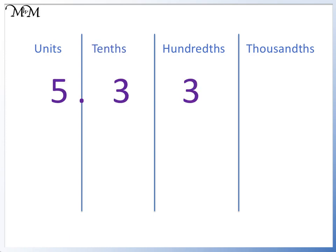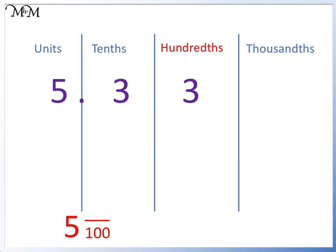Here we have 5.33. We start by looking at the whole number on the left-hand side of the decimal point. Our whole number is 5, so we can just write that down. Now we look at the decimal number on the right-hand side, 0.33. It finishes in the hundredths column, so the denominator is 100. Reading the number across from the decimal point, we have 33, so 33 hundredths. Our answer is 5 and 33 hundredths.